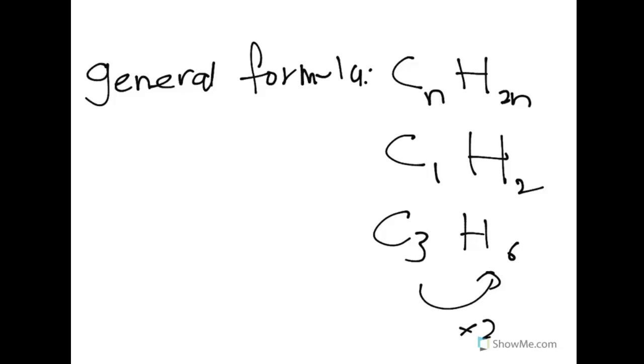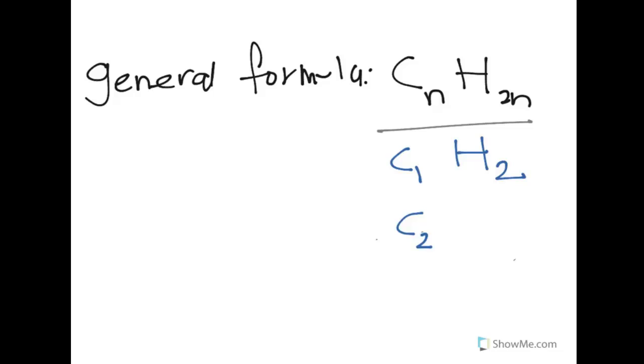So firstly, we have to know the general formula for an alkene. Let me erase this first not to confuse you guys. So the general formula for an alkene is CnH2n, which basically means the number of hydrogen is twice the number of carbon. So if my carbon is 1, my hydrogen is 2. If my carbon is 2, my hydrogen is 4. If my carbon is 6, my hydrogen is 12. So the number of hydrogen atom is always twice the number of carbon atom. So it follows a general formula CnH2n.